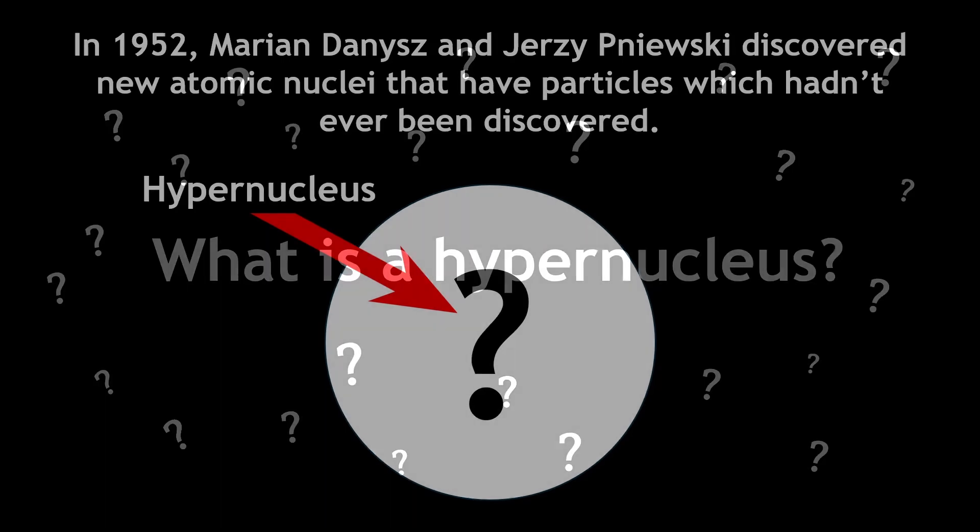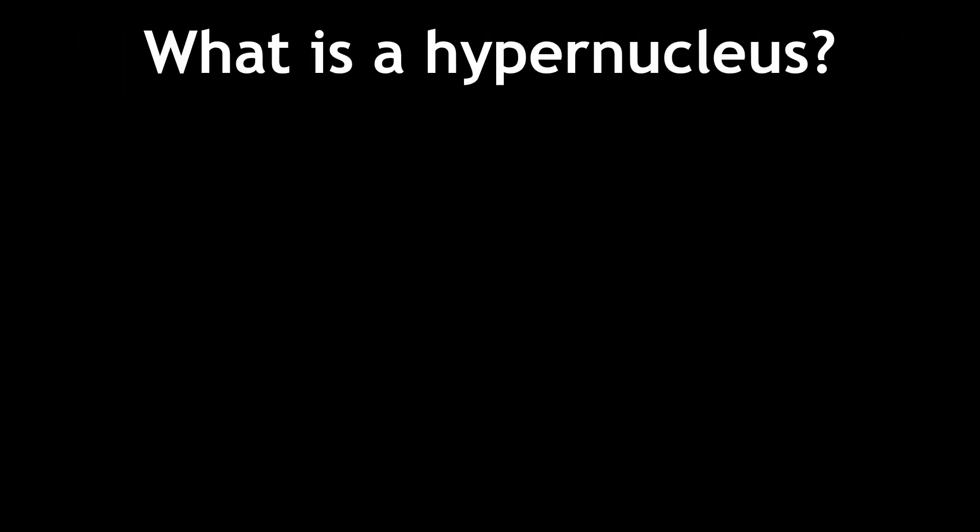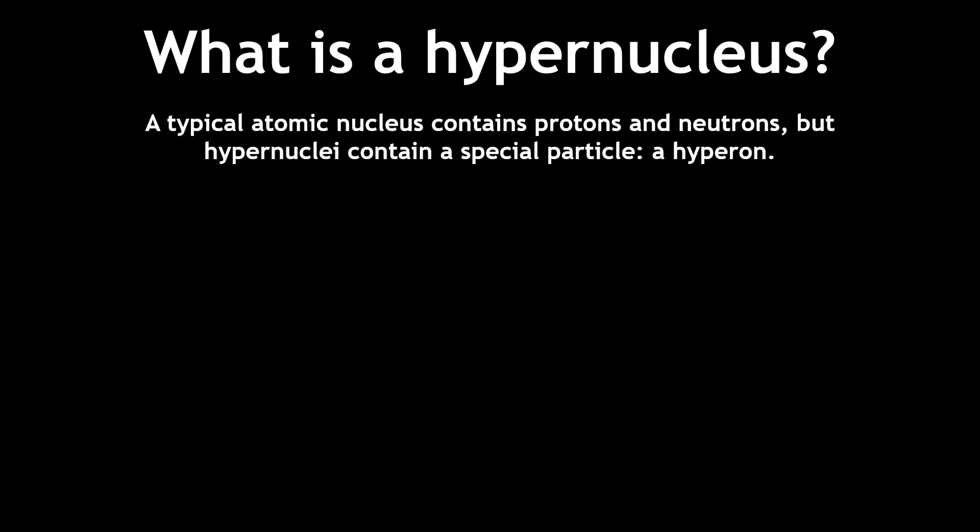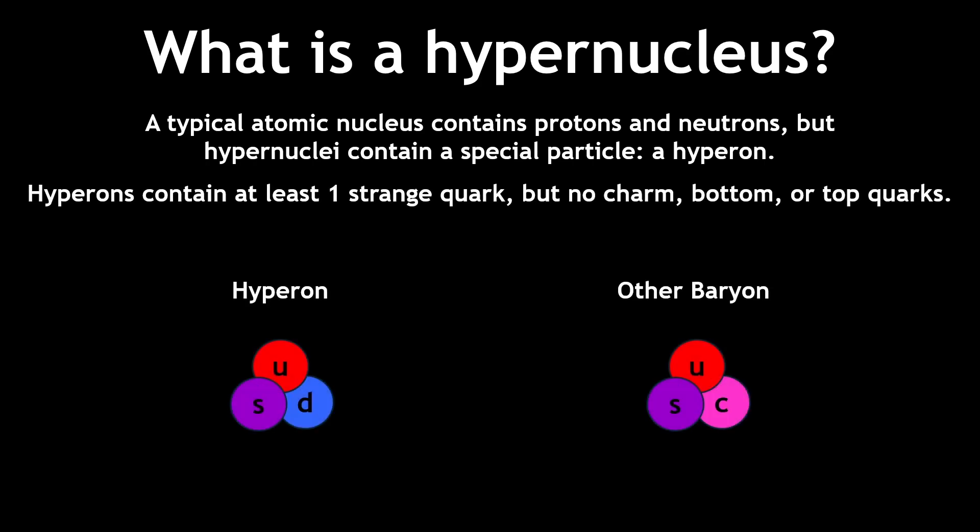So what exactly is a hypernucleus? Well, a conventional atomic nucleus contains protons and neutrons, but hypernuclei also contain a hyperon. Hyperons are a type of baryon which have one or more strange quarks, but no charm, bottom, or top quarks.